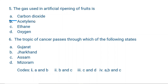Question number 6. The Tropic of Cancer passes through which of the following states: Gujarat, Jharkhand, Assam, and Mizoram? Since Assam and Mizoram are in the extreme northeast, the Tropic of Cancer does not pass through them. It passes through Gujarat and Jharkhand — A and B — so the correct option is A and B.